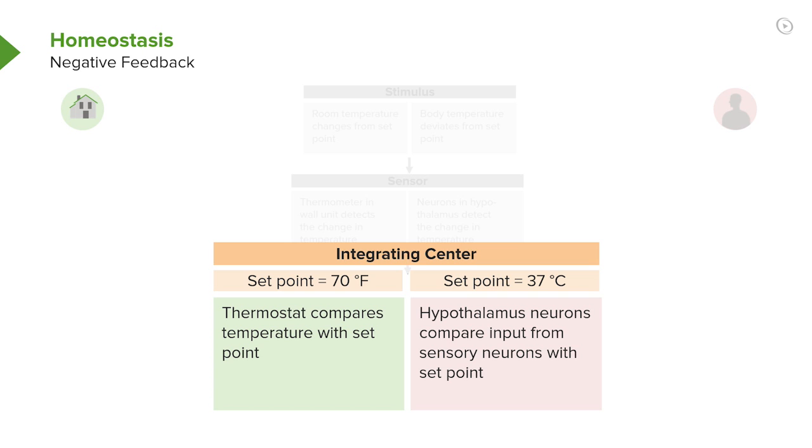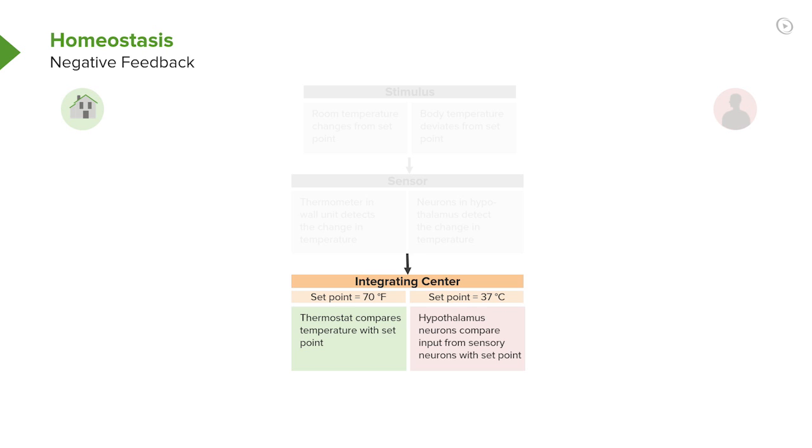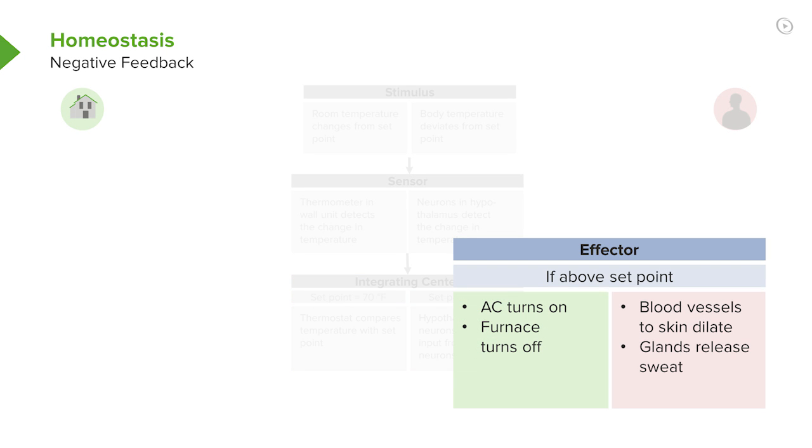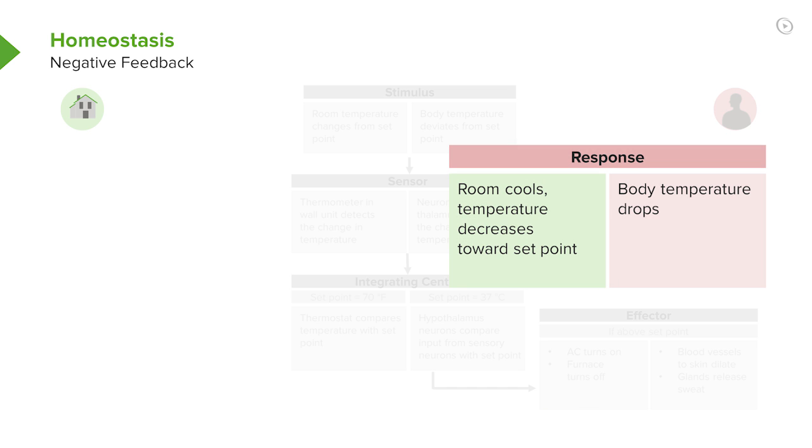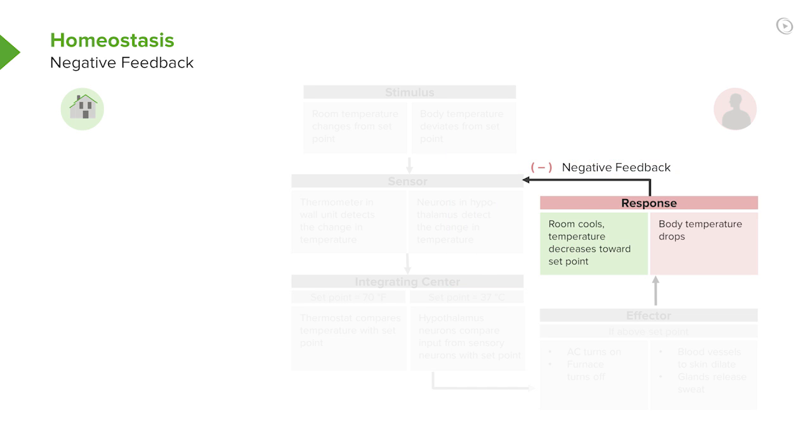Sometimes we increase or decrease a little bit around that, but it's important that we keep it right around that set point so all of our enzymes work properly. So, if we're a little bit warm, the effect is that blood vessels will dilate, will have vasodilation in the skin in order to shed some heat to the environment, in which case, our body temperature will then drop, which is the response, and that response then is detected by the sensor.